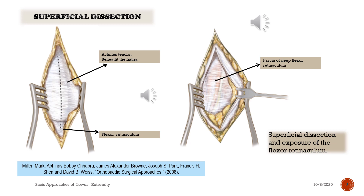Superficial dissection: notice the incision line and the Achilles tendon beneath the fascia of the flexor retinaculum. On the second figure, notice the fascia of the deep flexor retinaculum.